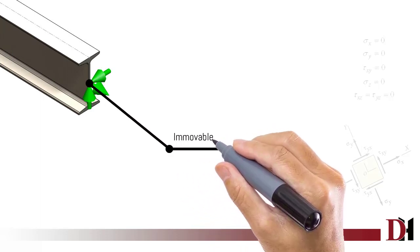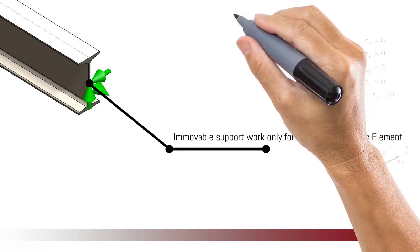Immovable Support works only for Shell, Beam, and Truss Elements.